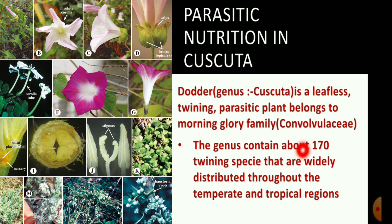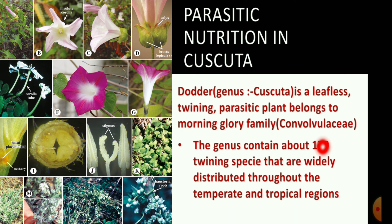The genus Cuscuta contains about 170 twining species that are widely distributed throughout the temperate and tropical regions.